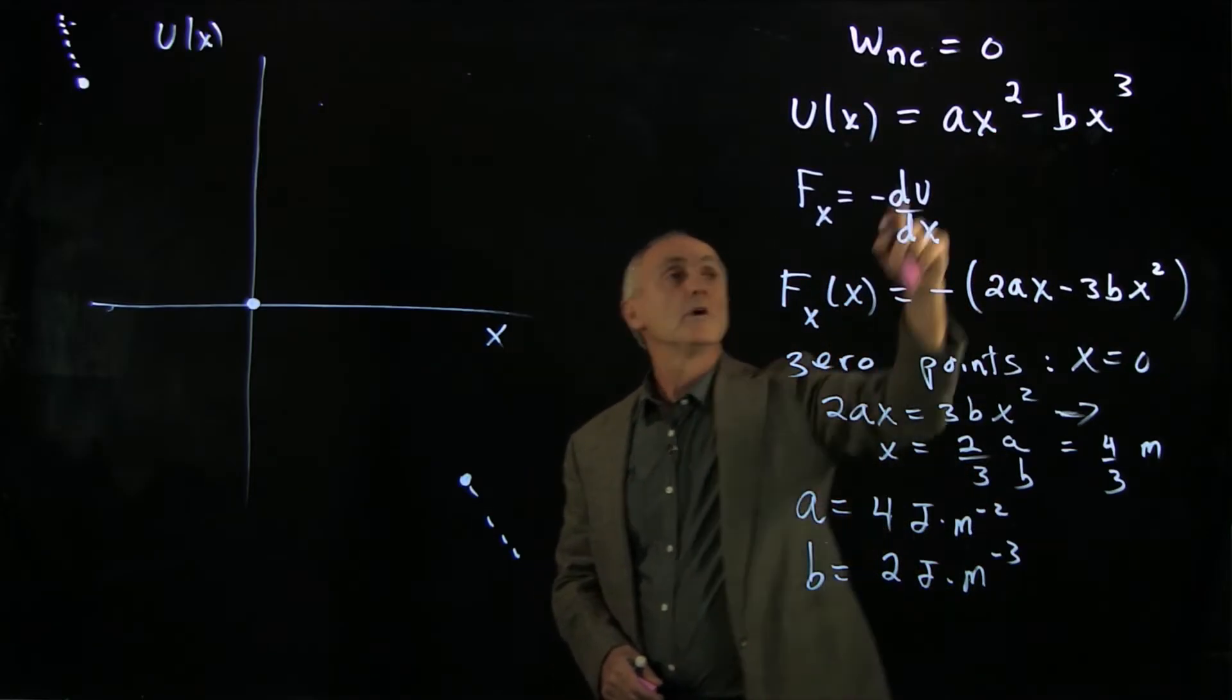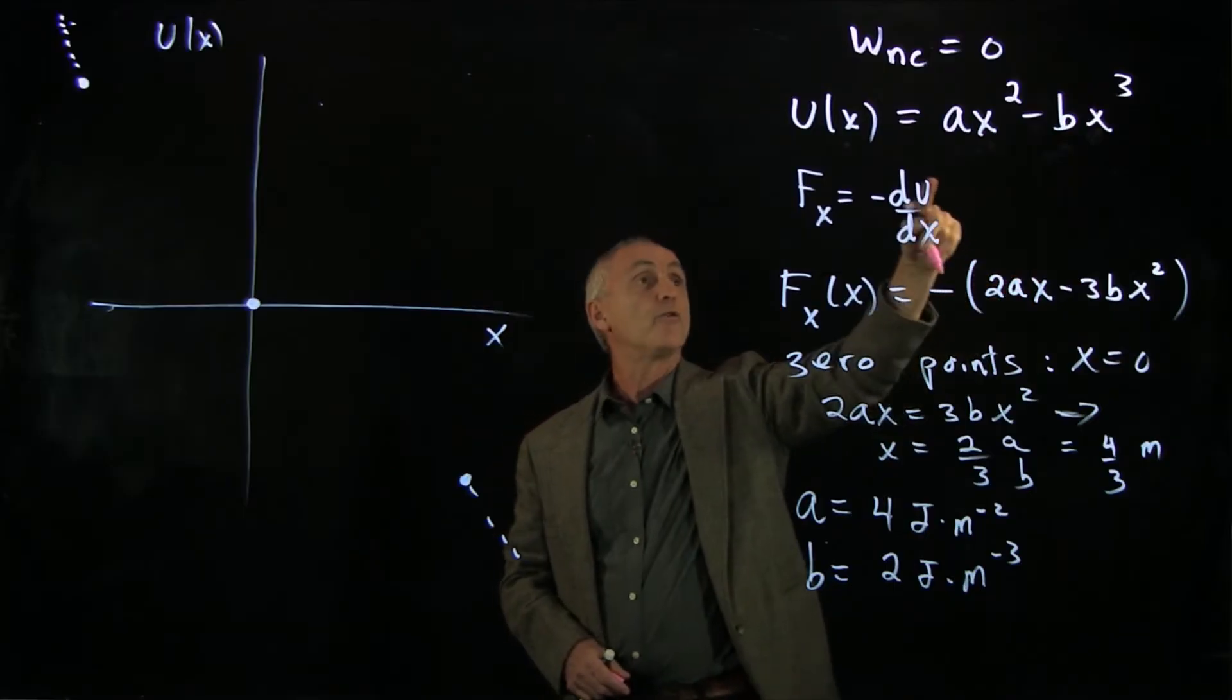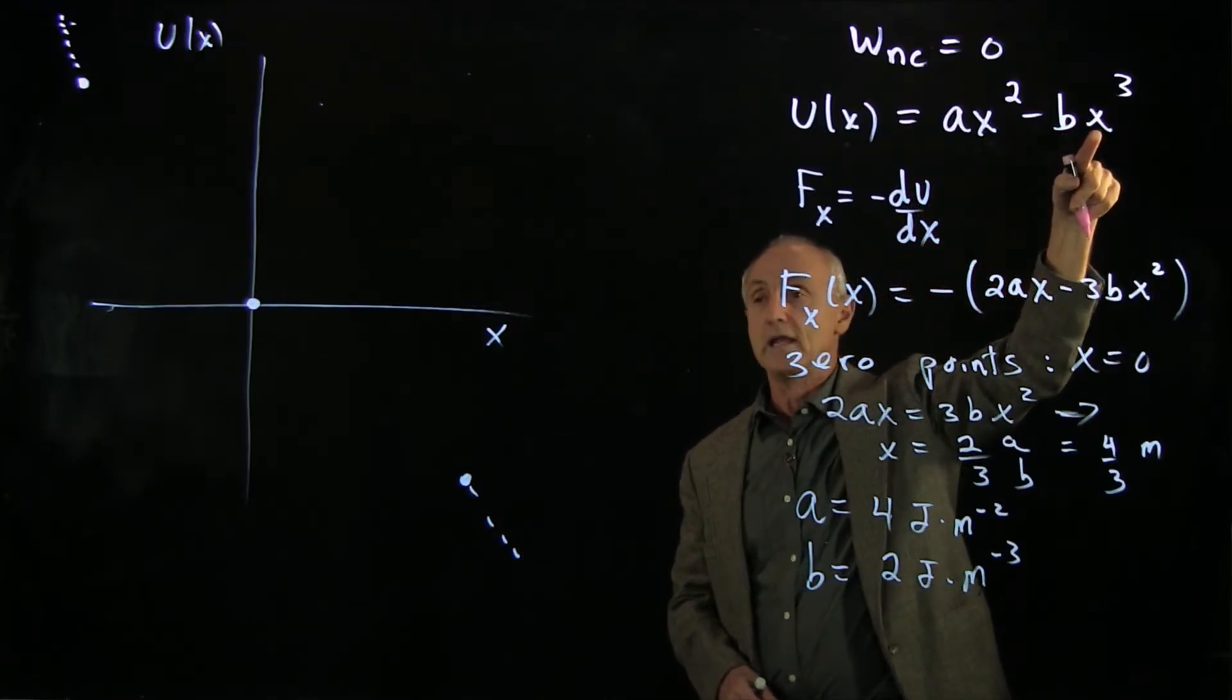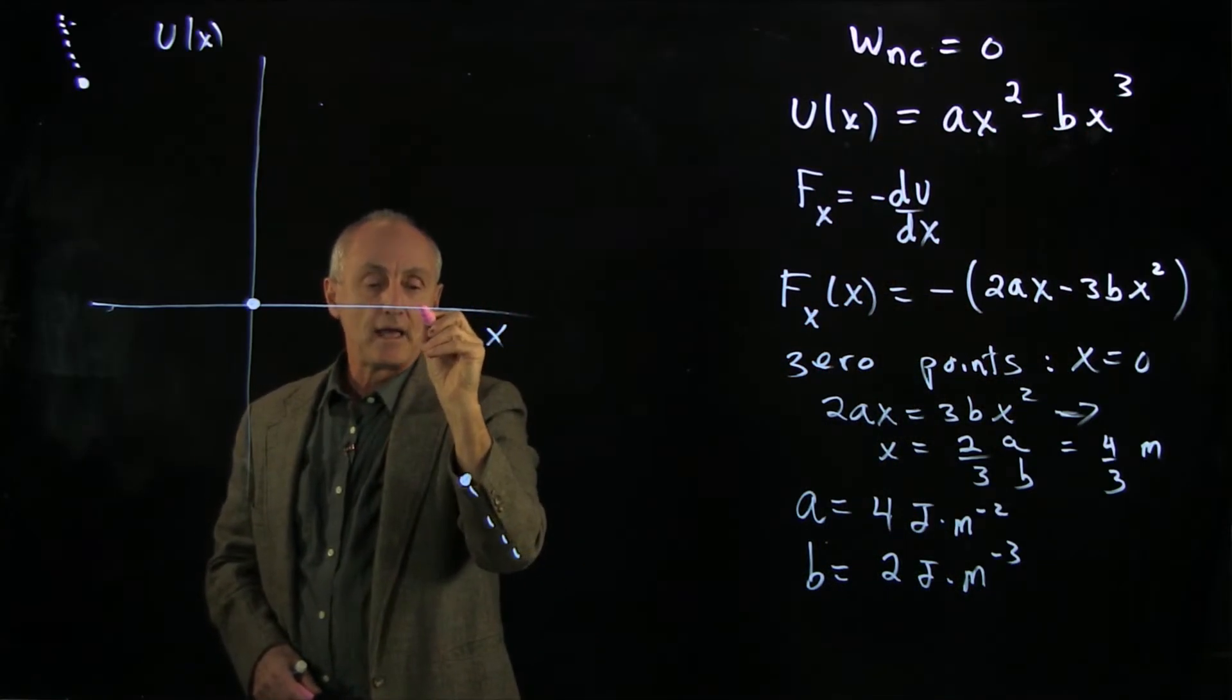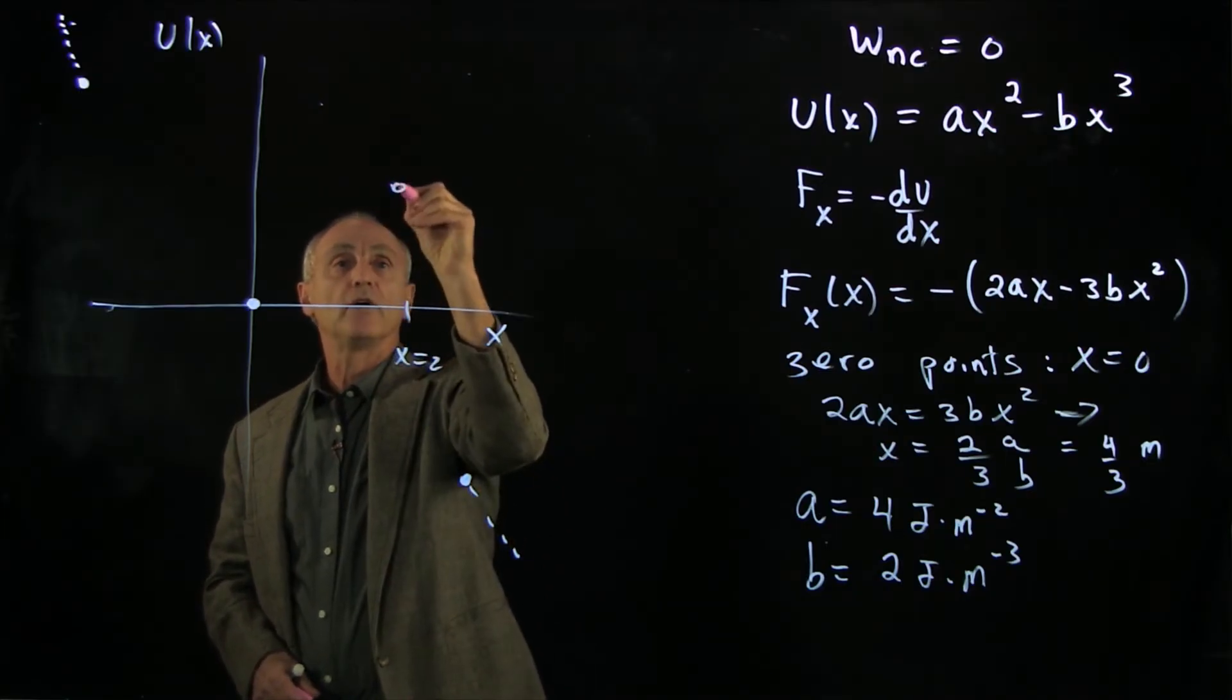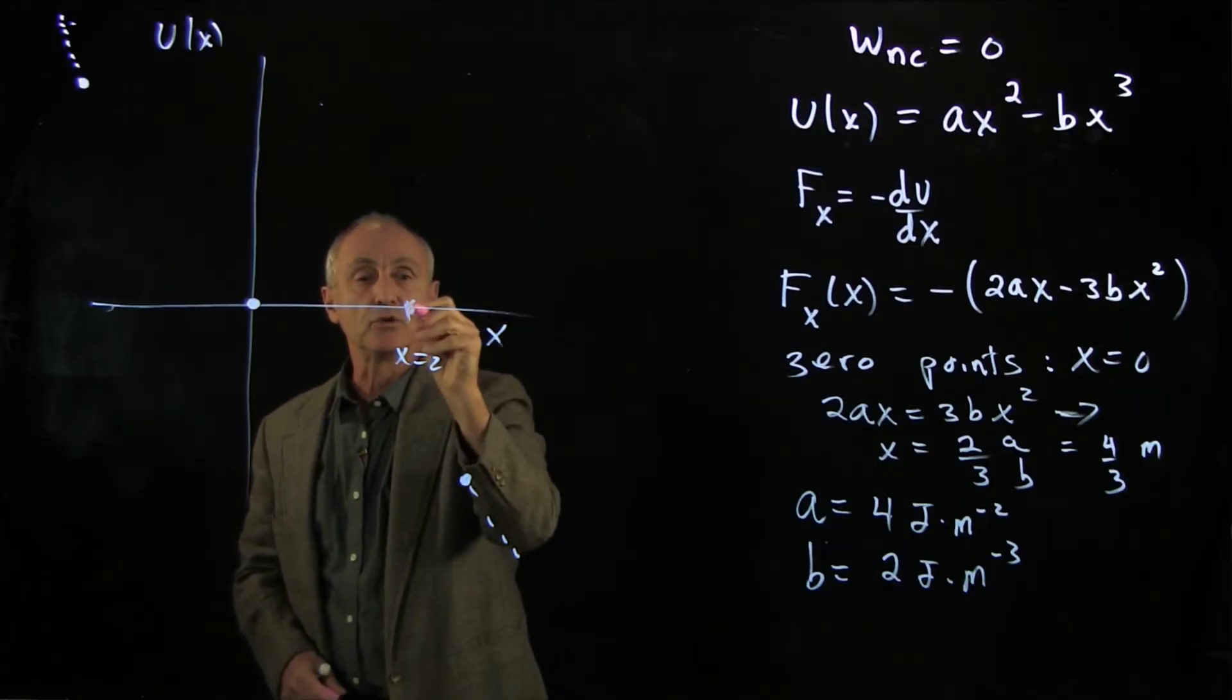If you set x equal to 2, 4 times 2 is 8. b times 2 times 2, 4 times 4 is 16. If b is 2 and x is 2, that's 16. So we get a cancellation at x = 2. We have a zero point at x = 2.